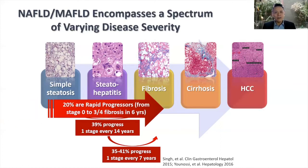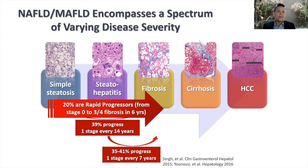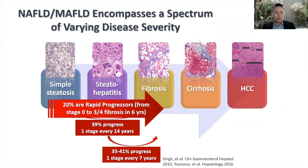There is also a minority group we call rapid progressors. Within six years, these patients may develop significant fibrosis — stage three or stage four — from a baseline score of zero or one. These are patients with multiple metabolic risk factors: overweight, diabetes, cardiovascular disease, hypertriglyceridemia. The more metabolic risk factors they have, the higher the likelihood they will be rapid progressors, so addressing metabolic dysfunction is critical.